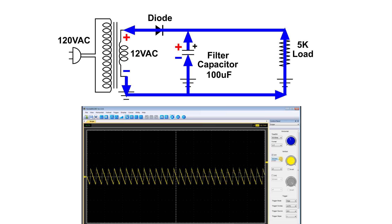Getting back to our circuit, when the top part of that secondary is positive and the bottom is negative, the diode at the top is forward biased and electrons can flow through it — notice that they flow against the diode's arrow. Electrons flow up from ground and onto the plate of that capacitor, and the electrons on the upper plate get repelled and flow through the diode, charging that capacitor.